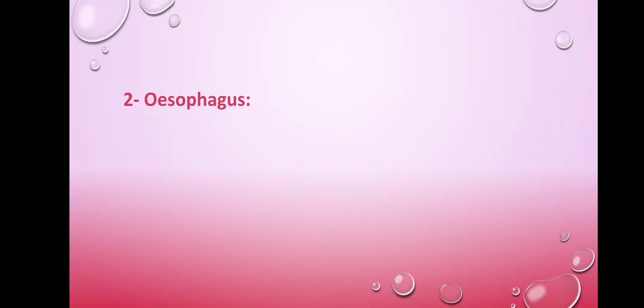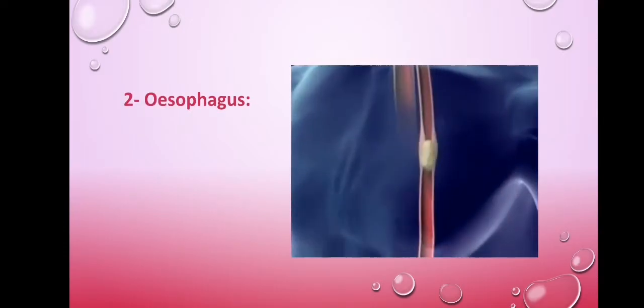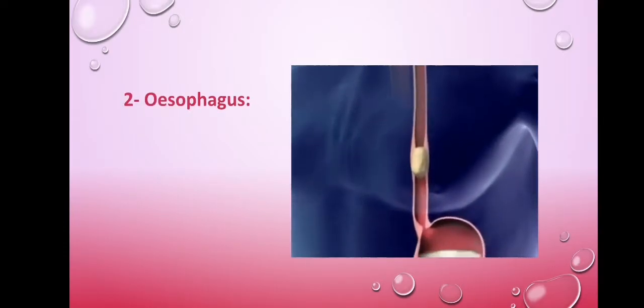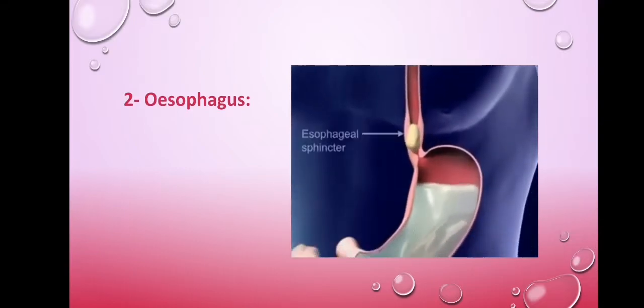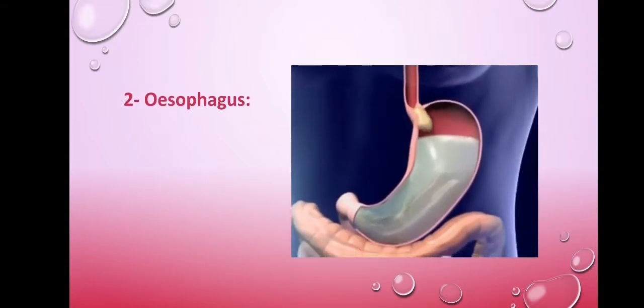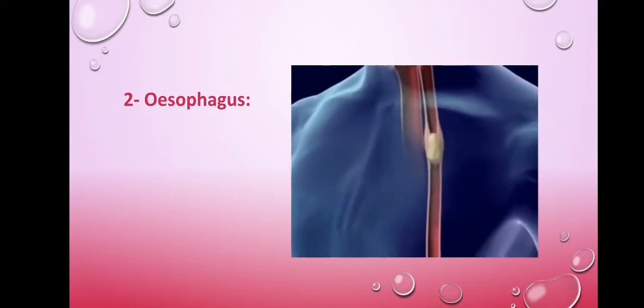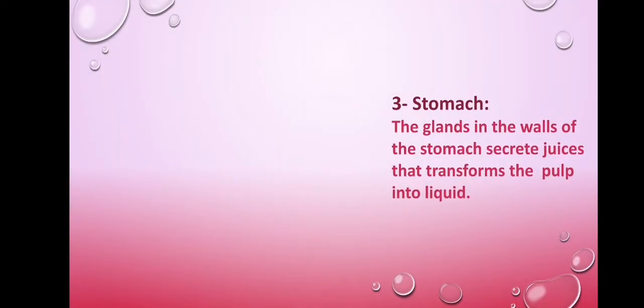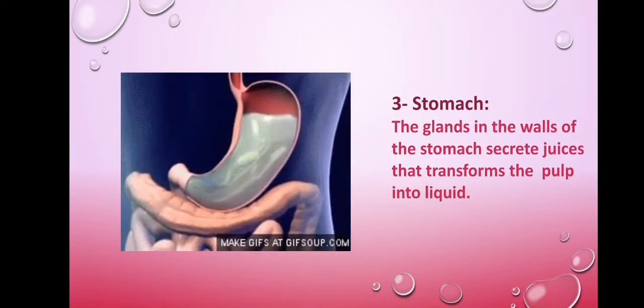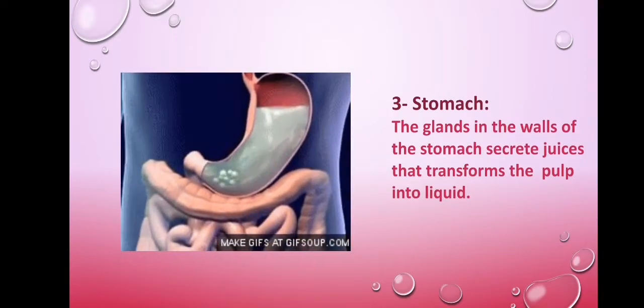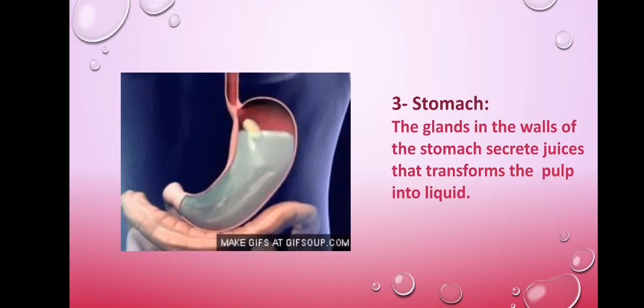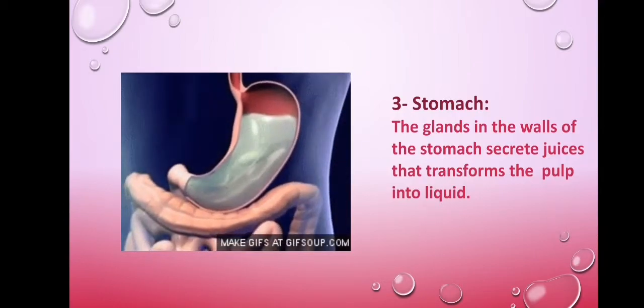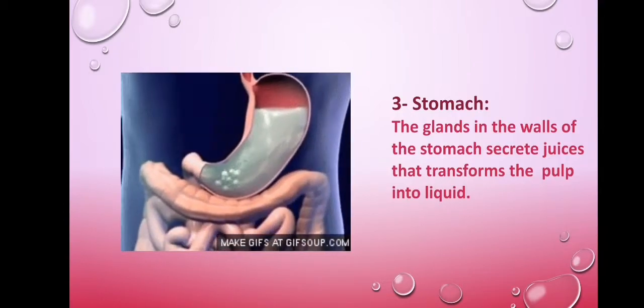Number two, the esophagus. The food pulp passes into the esophagus, which pushes it down into the stomach. Then in the stomach, the glands in the wall of the stomach secrete gastric juices that break down the food pulp and transform it into liquid.